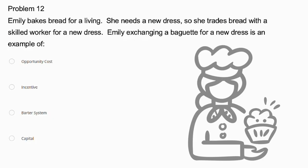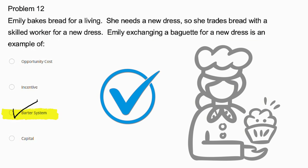Problem number 12. Emile bakes bread for a living. She needs a new dress, so she trades bread with a skilled worker for a new dress. Emile exchanging a baguette for a new dress is an example of opportunity cost, incentive, barter system, or capital? The correct answer is the barter system, because she is directly trading goods without using money. Opportunity cost refers to the loss of potential gain from other alternatives, an incentive is something that motivates behavior, and capital refers to financial assets or resources.